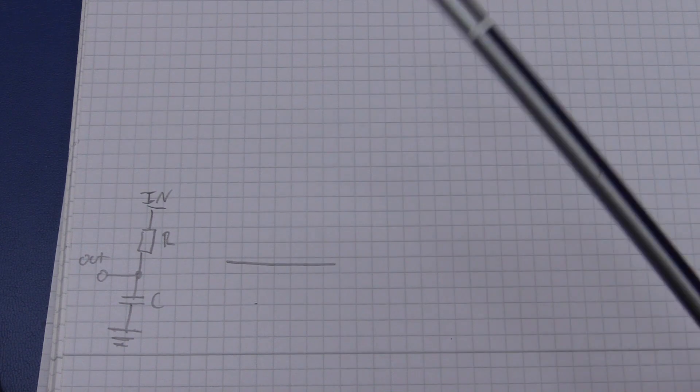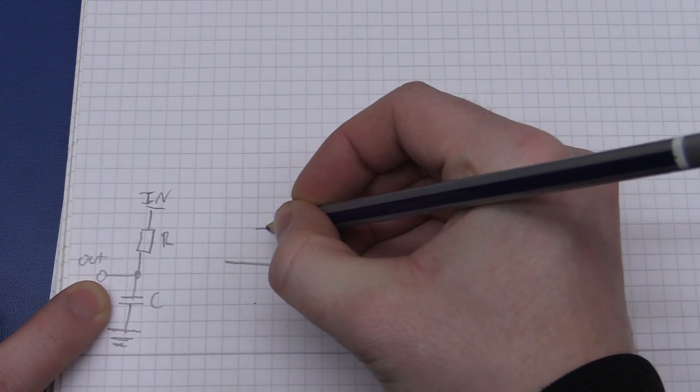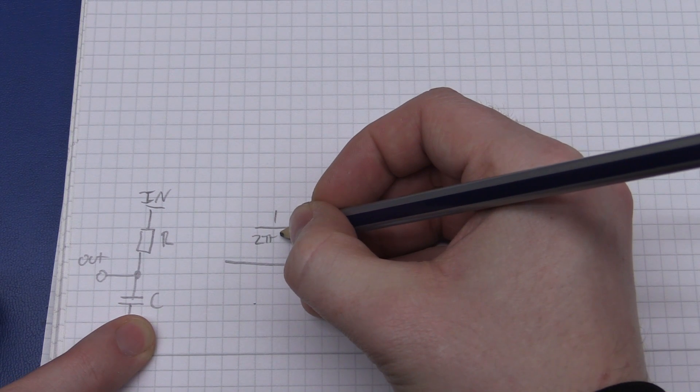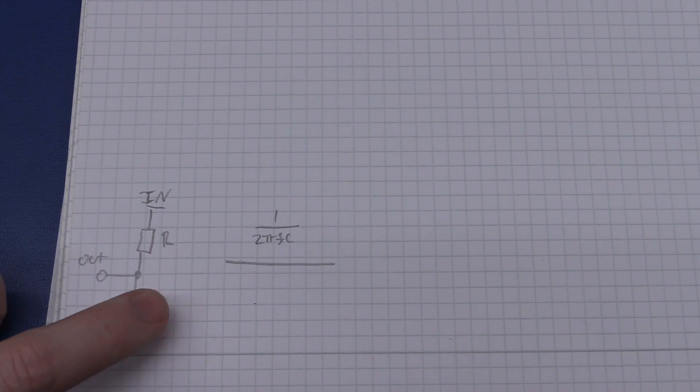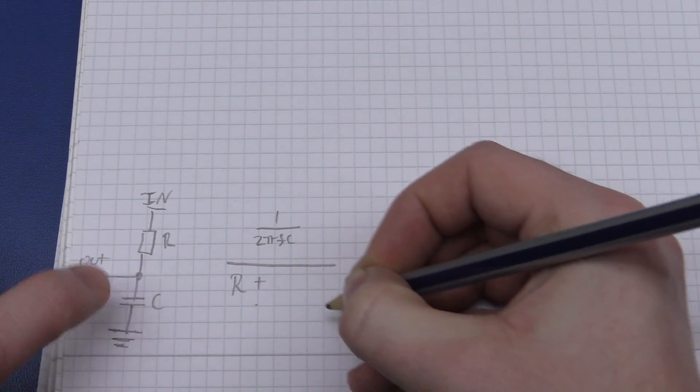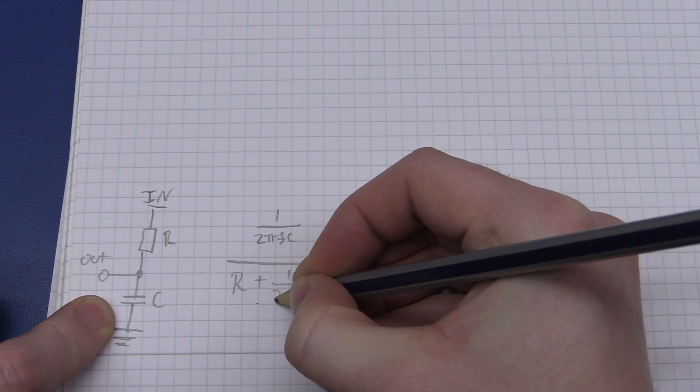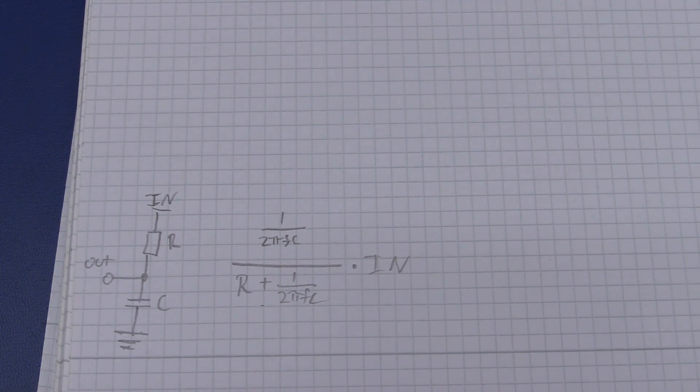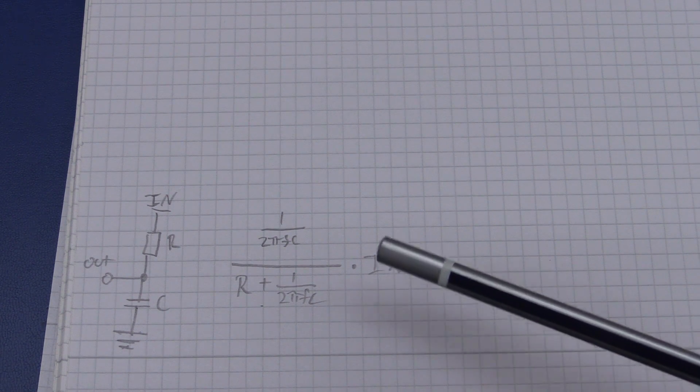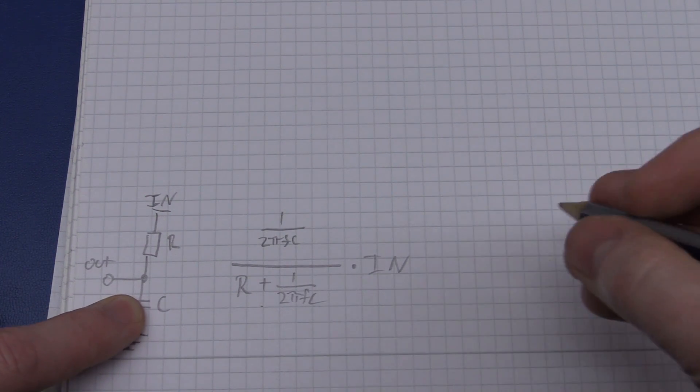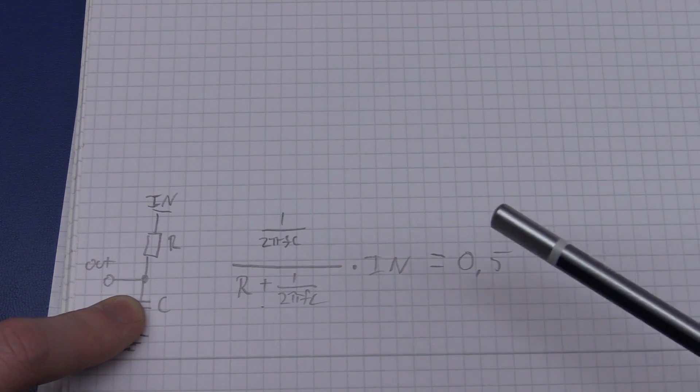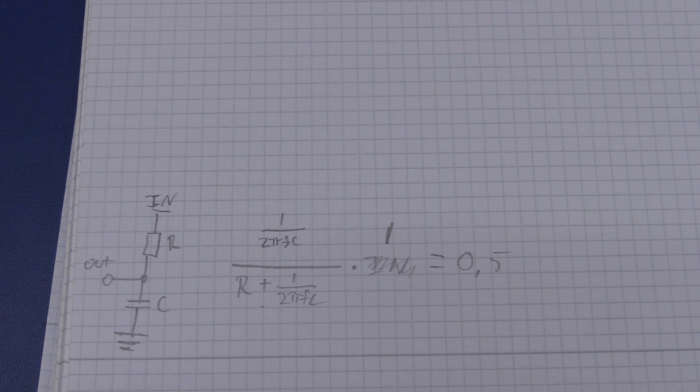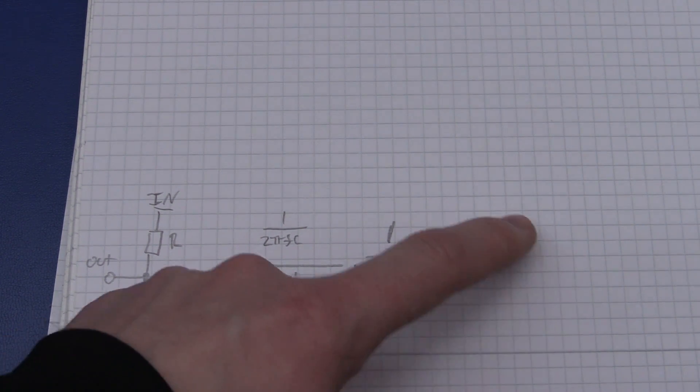We get our fraction ready here, and the impedance of a capacitor is 1 divided by 2π, and then Fc, so the frequency times the capacitance. Then in the denominator, just as before, we take R plus, and then what we got down here, so 1 over 2πFc, times the input voltage. Now we got the voltage divider equation, and to find the cutoff frequency of the filter, set this equal to 0.5 times Vin. If you just say that this is 1, then this needs to be 0.5.